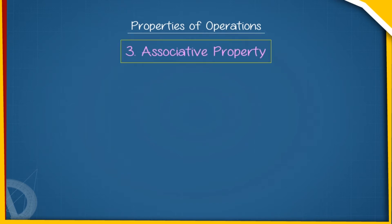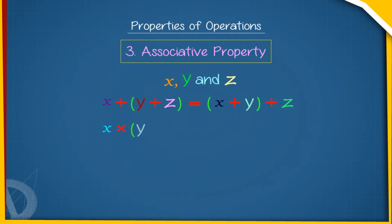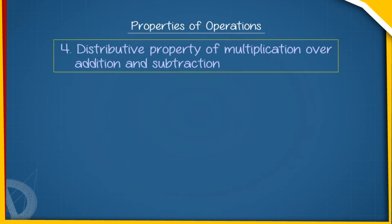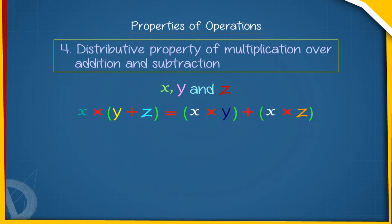3. Associative Property: For rational numbers X, Y, and Z, X plus (Y plus Z) equals (X plus Y) plus Z, and X multiplied by (Y multiplied by Z) equals (X multiplied by Y) multiplied by Z. 4. Distributive Property of Multiplication over Addition and Subtraction: For rational numbers X, Y, and Z, X multiplied by (Y plus Z) equals X multiplied by Y plus X multiplied by Z, and X into (Y minus Z) equals X multiplied by Y minus X multiplied by Z.